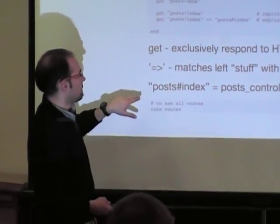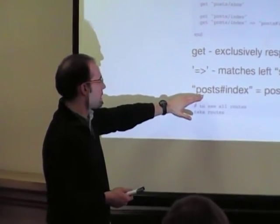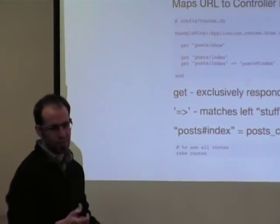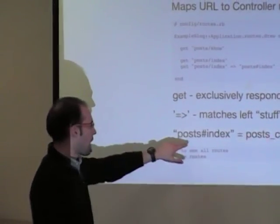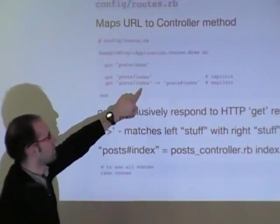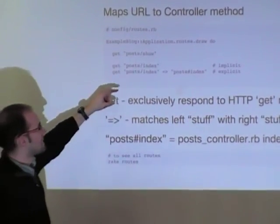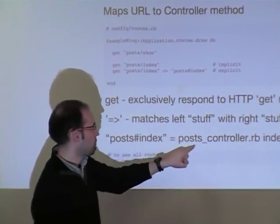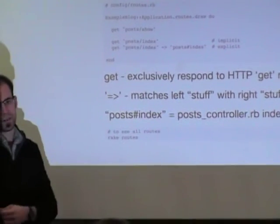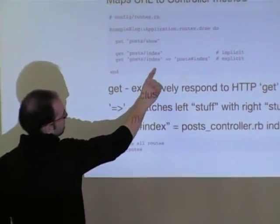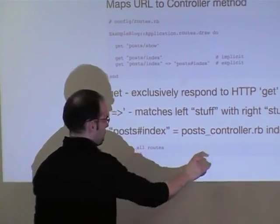The implicit route notation — like 'get posts/index' — is shorthand. The explicit version maps whatever comes in via the GET posts/index HTTP route and sends it to the posts controller index method. The URL you're requesting maps to the place it's sent. So 'get posts/index' maps to the posts_controller#index action.